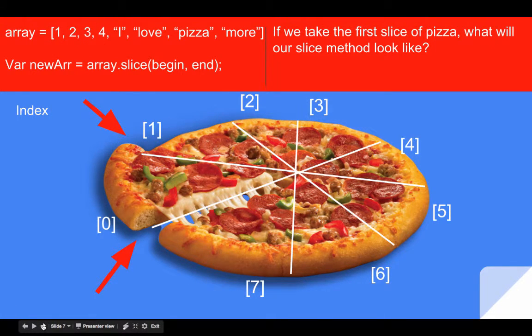So if we take the first slice of pizza, what will our slice method look like? It would look like this. We would declare a new array with the var keyword var newArr equals our original array array.slice beginning at index zero, ending at index one.